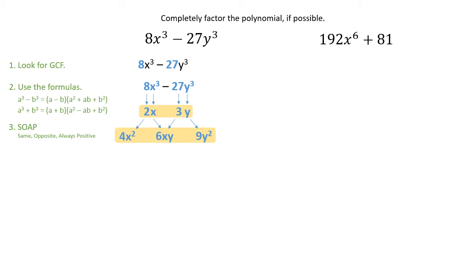Now we're going to use SOAP to place the signs. So look at the original expression, and notice that that is a subtraction sign. We're going to use the same sign in the first expression with the two roots. The next sign we're going to place is at the beginning of the second expression. That's going to be the opposite sign. So same, opposite. And the last sign is always positive. So when you look at these side by side, we have 2x minus 3y, and then we also have that multiplied by 4x squared plus 6xy plus 9y squared.